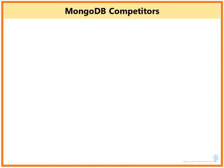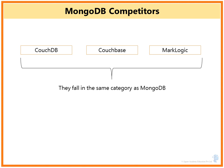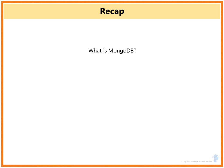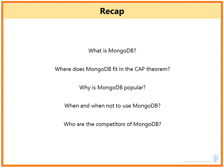MongoDB's top competitors are CouchDB, Couchbase, and MarkLogic, since they fall into the same category — all are document-based databases satisfying C and P in the CAP theorem. To summarize this lesson: we covered what MongoDB is at a high level, where it fits in the CAP theorem, why it is popular, when to use and when not to use MongoDB, and who its competitors are.